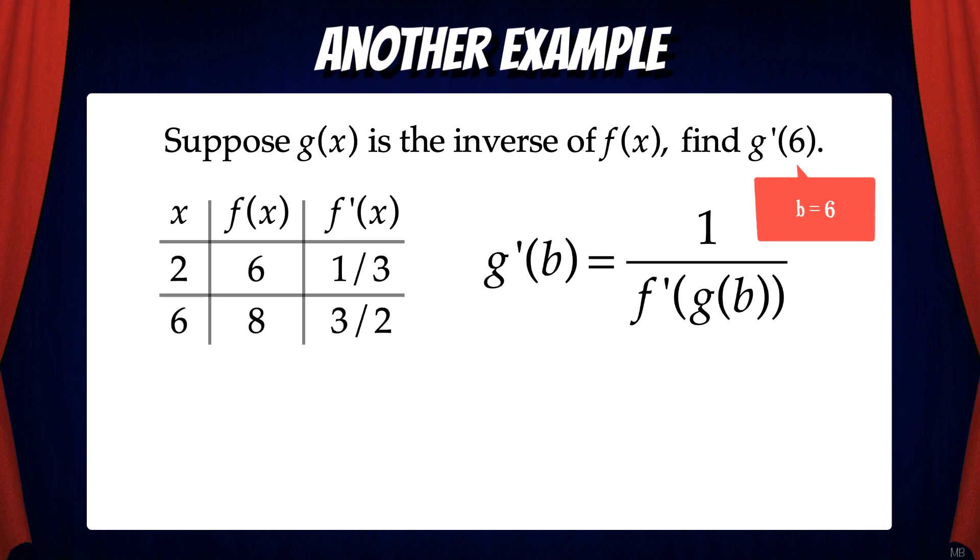In this case, b equals 6. So g prime of 6 equals 1 over f prime of g of 6. Now we got to figure out what g of 6 is. Well, f of 2 equals 6 from the table. So that means g of 6 equals 2.